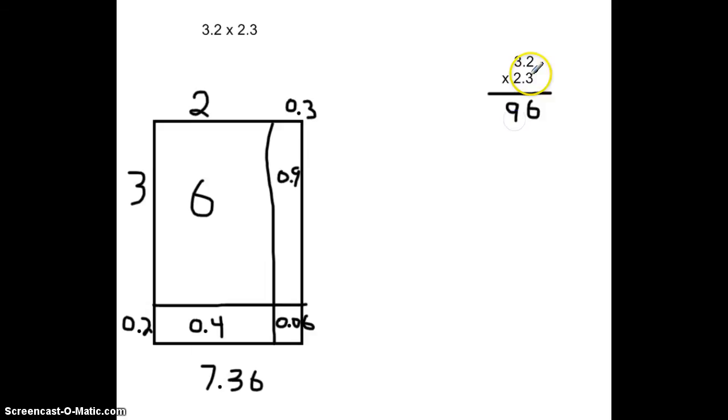3 times 3 is a 9. Or, in this case, it's 0.3 times 3. Then we're going to take a 2 times a 0.2. We're going to use our 0 once again as a placeholder. We get a 4. And then we take 2 times 3 is 6. Adding these numbers together, we're going to get 7.36.